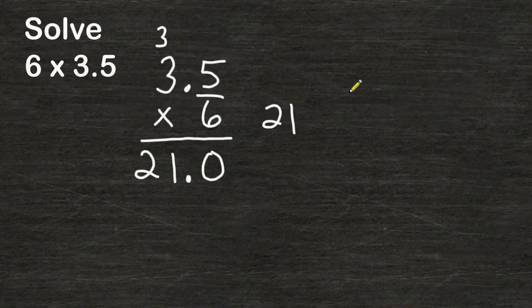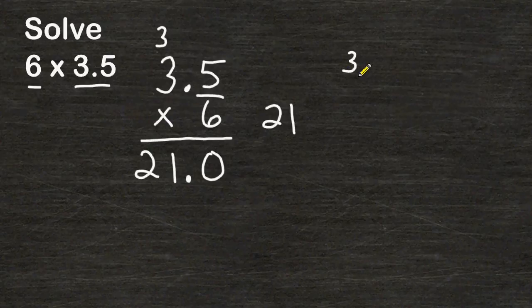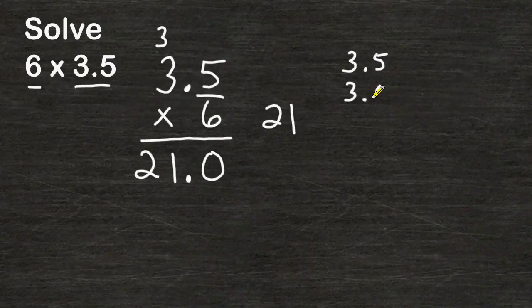Another way that you could have looked at this problem is by saying we are trying to figure out what 6 sets of 3 and a half is equal to. Well using mental math, we should know that 2 sets of 3 and 5 tenths, or 3 and a half, would be equivalent to 7 wholes.